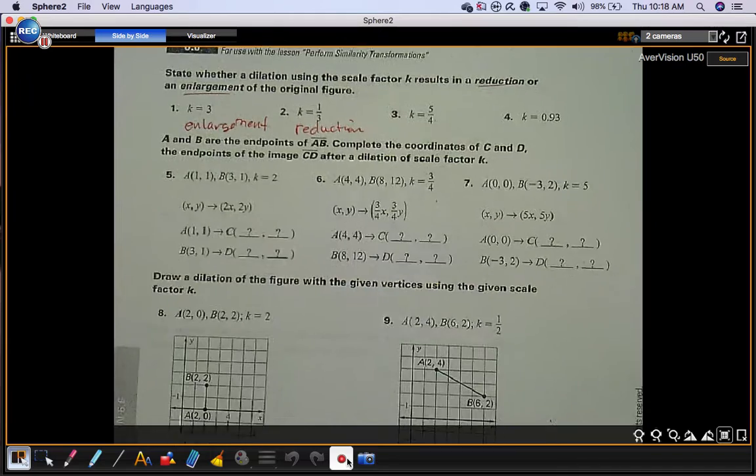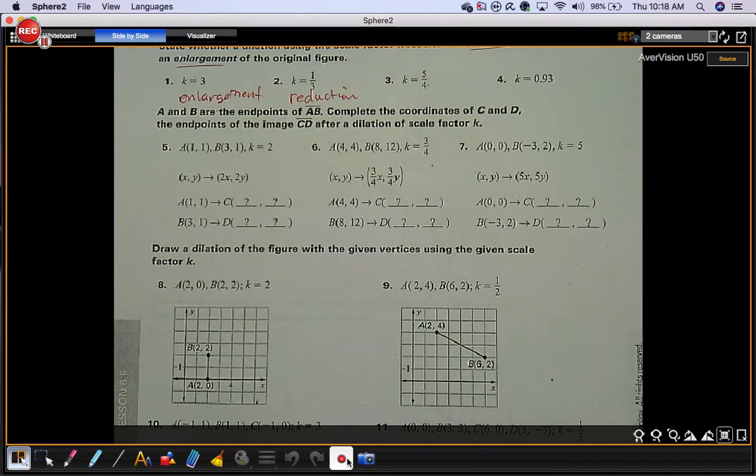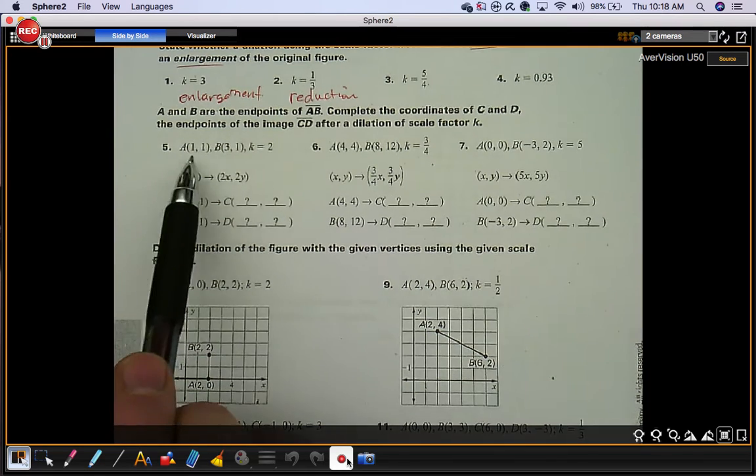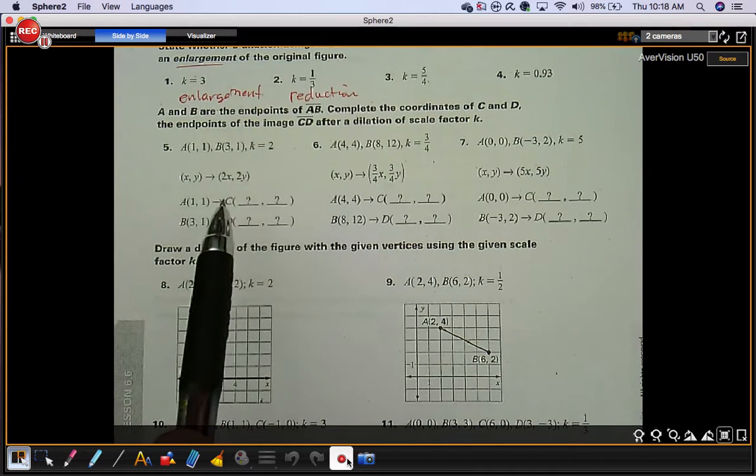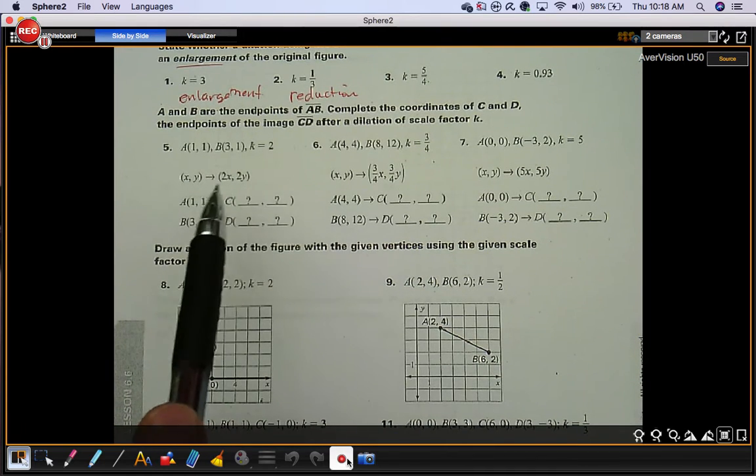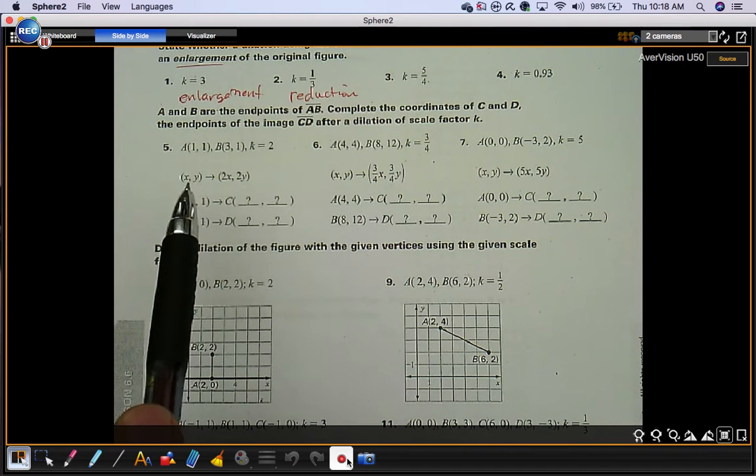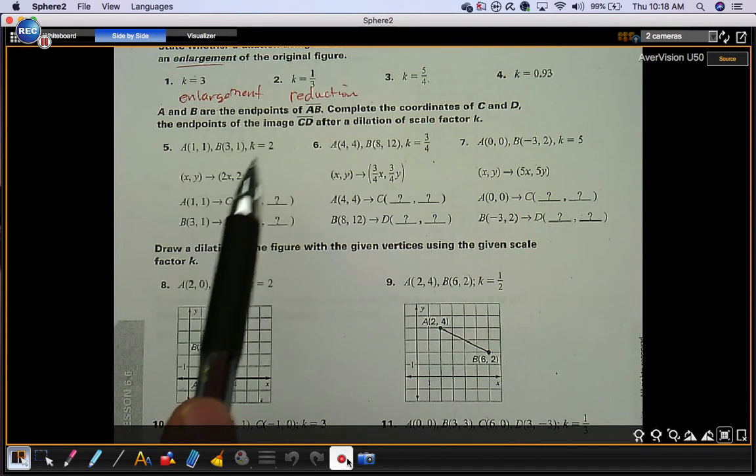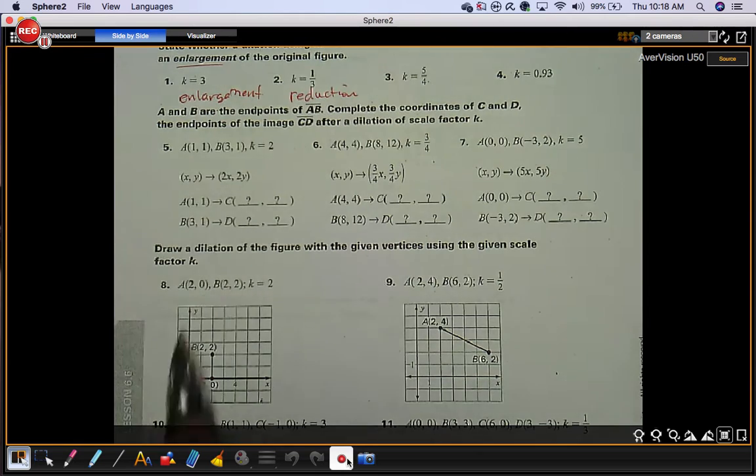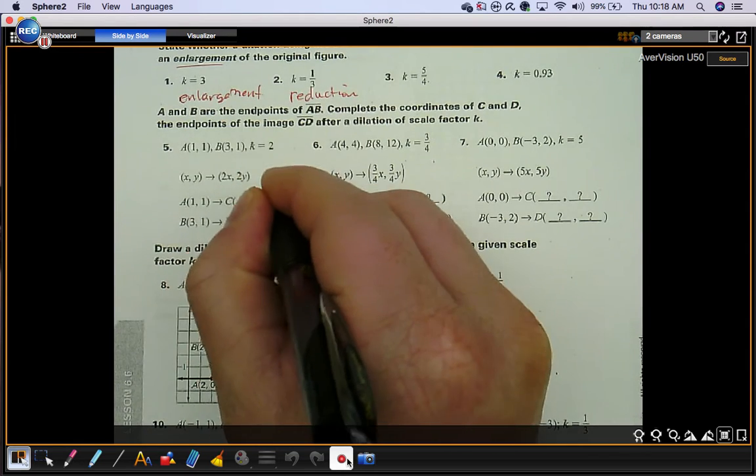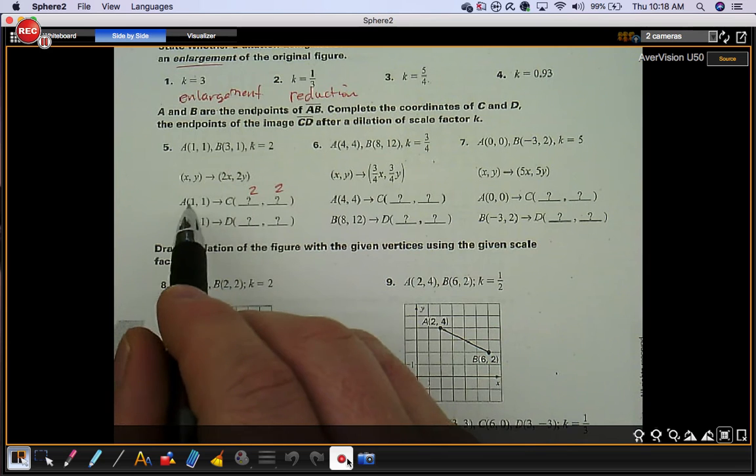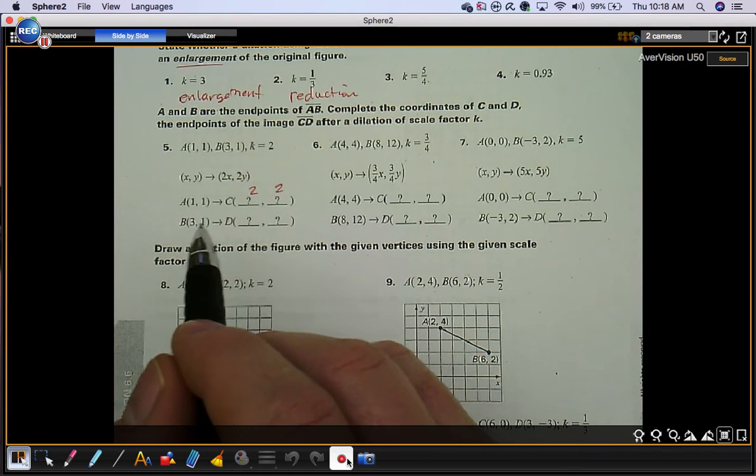Points A and B are endpoints of segment AB. Complete the coordinates of points C and D, the endpoints of image segment CD, after the dilation of scale factor k. You have these two endpoints of a segment and they give you a scale factor. What you're doing is taking each x and y value and multiplying them by that scale factor 2. So the ordered pair 1, 1 changes to 2, 2 because you multiply by 2 and multiply by 2. Do the same thing down here too.